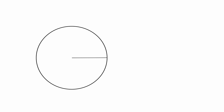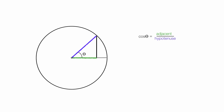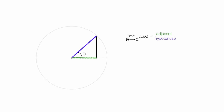Let's imagine I have a circle, and I'll draw in a radius. Now I'm going to sweep out an angle and call that angle theta. Now I'm going to make a triangle, and recall that cosine theta is equal to the adjacent side — the green side — divided by the hypotenuse, which is the blue side. Now if I take the limit of theta and let it approach zero, or get very, very small, what happens to the ratio of the adjacent and hypotenuse sides?